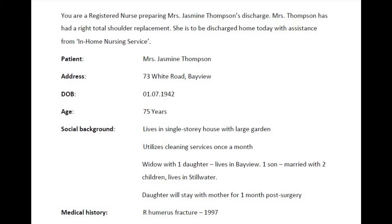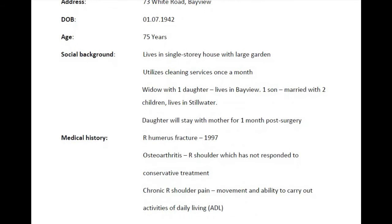The details of the patient are given as Mrs. Jasmine Thompson, 73 White Road, Bay View, date of birth 1 July 1942, age 75. All these details are obviously relevant and should come in the first part of the letter — the address and reference. In the social background, we can see some irrelevant information, such as she lives in a single-story house with a large garden and utilizes cleaning services once a month, because it doesn't affect the service or the service provider.